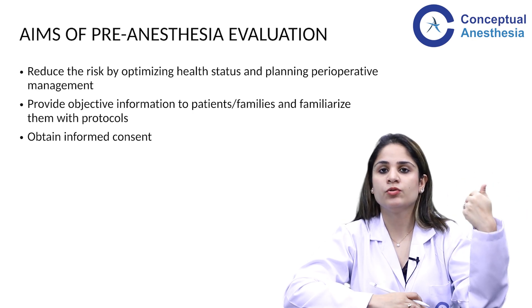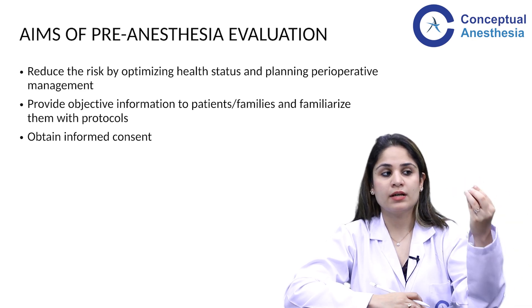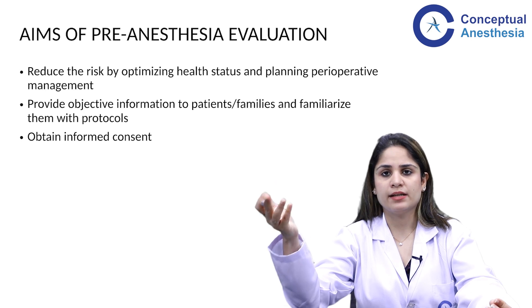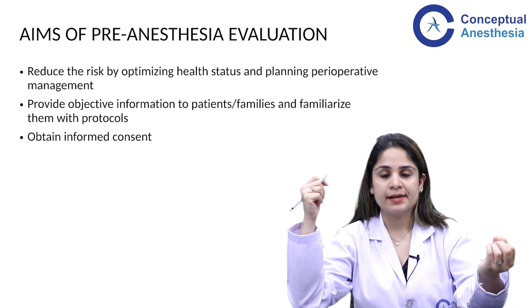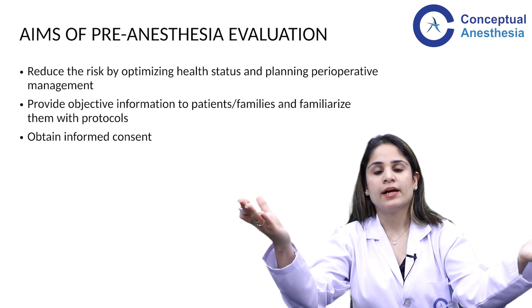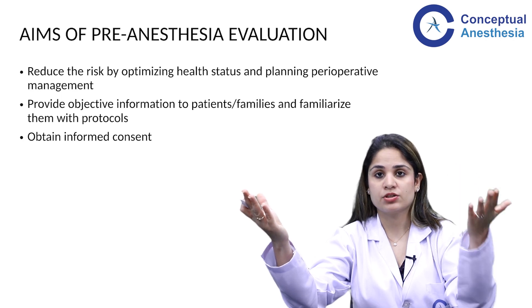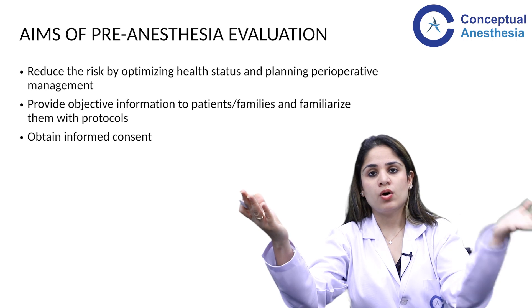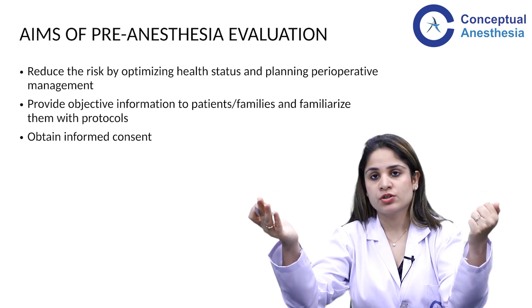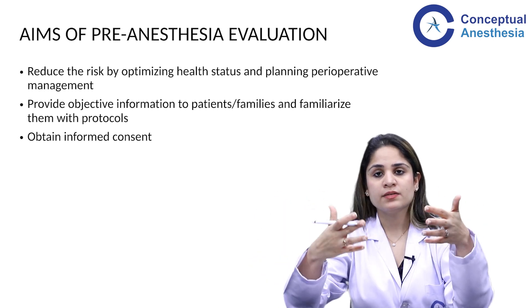You also want to identify high-risk patients and optimize their health status before planning perioperative management. For example, if a patient is at high cardiac risk but undergoing elective hernia repair, you can take time to optimize their cardiac status — starting medications or performing coronary revascularization. However, if it is an emergency surgery, there is no time for optimization; instead, the pre-anesthesia evaluation focuses on explaining the risks to relatives.